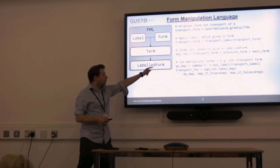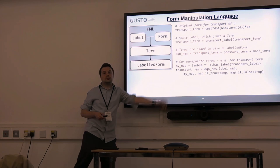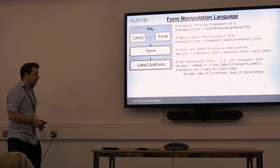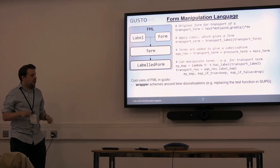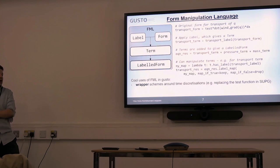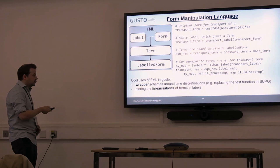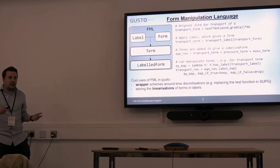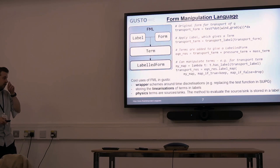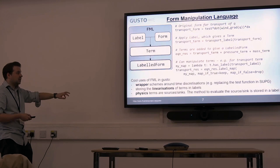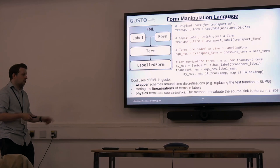How do I get that transport term back from this residual? That's something you wouldn't really have been able to do without FML. Some cool uses I'm particularly fond of: we have a thing called a wrapper which wraps around a time discretization, allowing you to change the space in which you solve one term or replace the test function for SUPG. We store linearizations of all our terms in labels, so we can make our linear equation set by just replacing every term with a certain linearization. Physics schemes are also stored in labels — we think of these as sources or sinks to equations, with a function stored in a label telling us what to do.